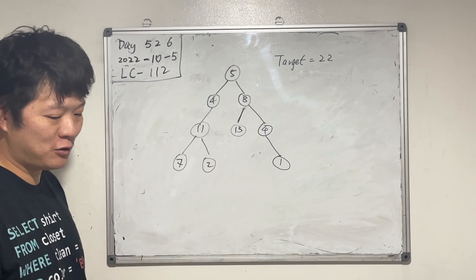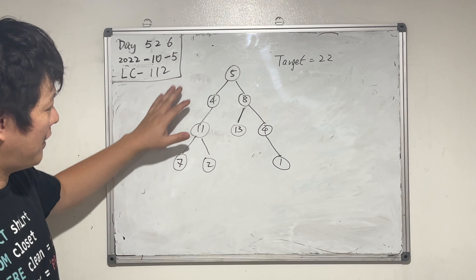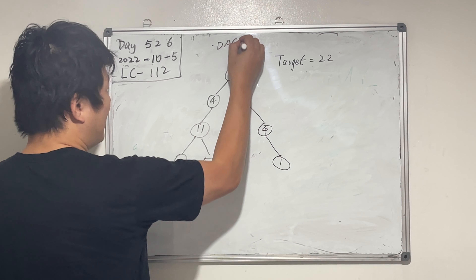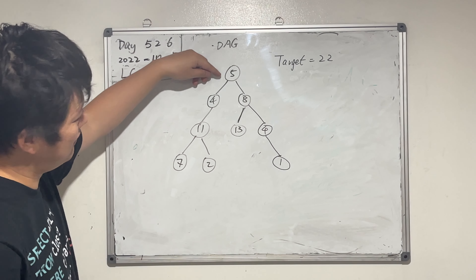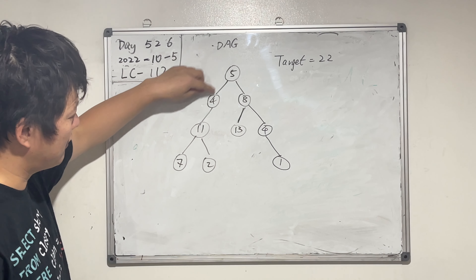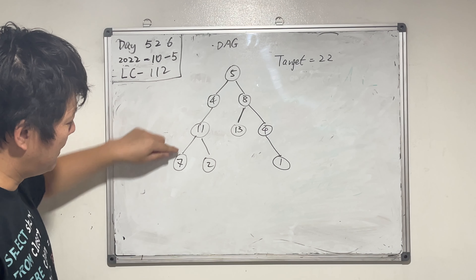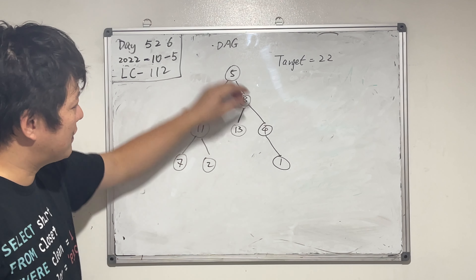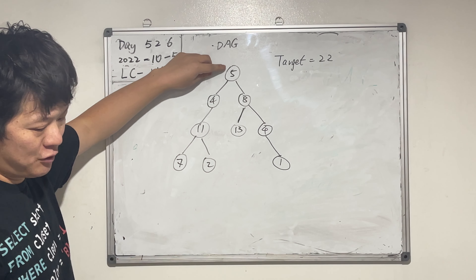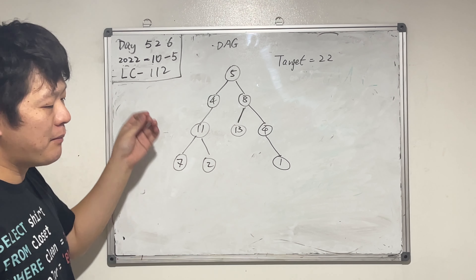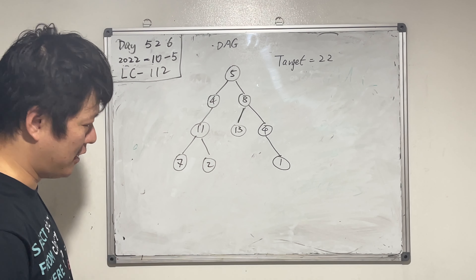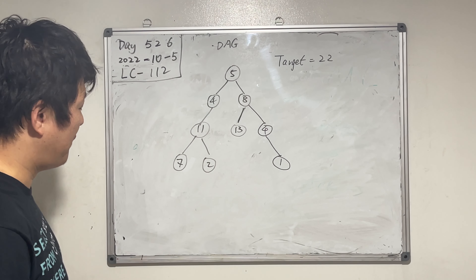A tree is a graph, and for trees it's like a directed acyclic graph. Directed means that only the parent goes to the kids — this is the parent node, and these are the children nodes. The ones without children we call leaves, the one without a parent we call root. There's only one root in a tree, and at most two kids per node in a binary tree.